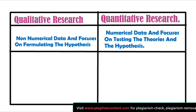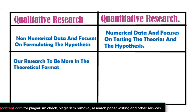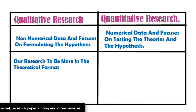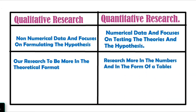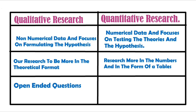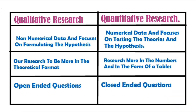In qualitative research we generally want our research to be more in the theoretical format, and in quantitative research we express our research more in numbers and in the form of tables. In qualitative research we ask open-ended questions, and in quantitative research we generally ask closed-ended questions related to the MCQ pattern.